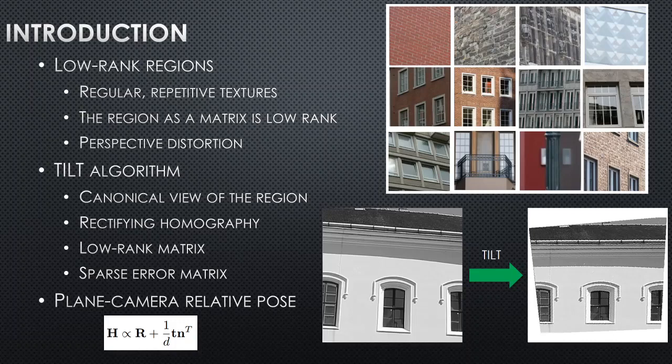To resolve this, we use the TILT algorithm, which can produce a canonical view of the region with a rectifying homography, a low-rank matrix of the region, and a sparse error matrix. With the rectifying homography, we can factorize a plane-camera relative pose, and this is the main goal of our project.